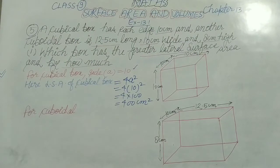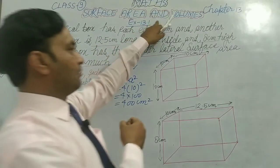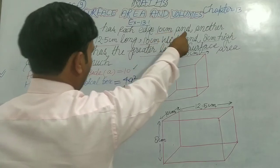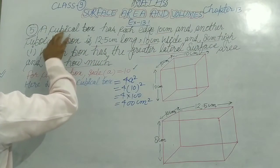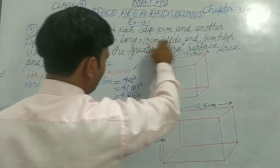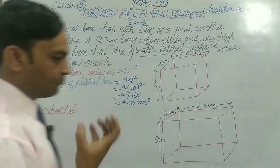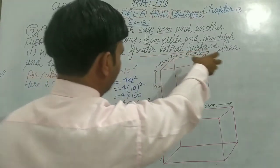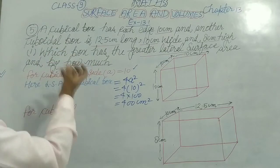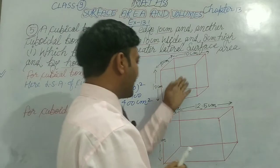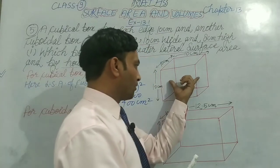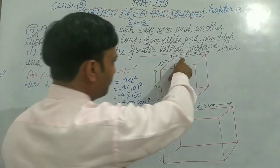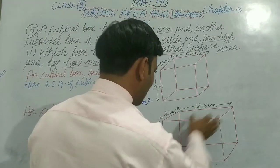Let's see question number 5 over here. In question number 5 of exercise 13.1, we have a cubical box with each side as 10 cm, and another cuboid box whose three dimensions are given. So we have two parts in this question. We will do the first part first: which box has greater lateral surface area, and by how much? We drew both boxes — one cubical and one cuboid — and noted their dimensions.